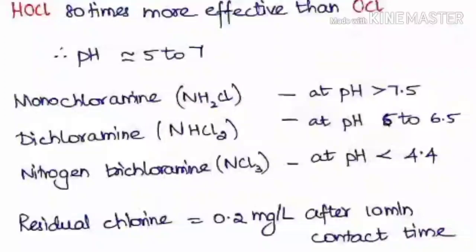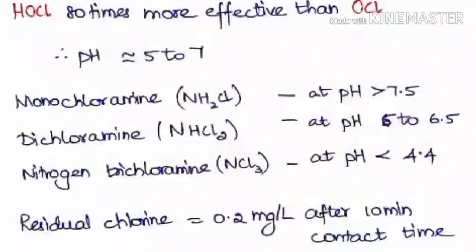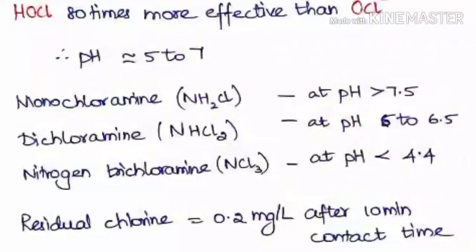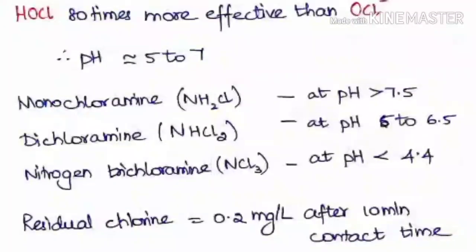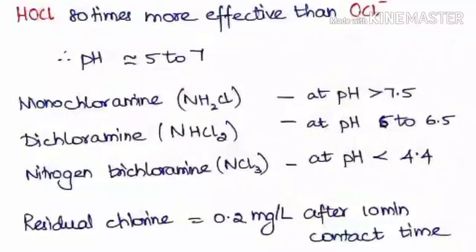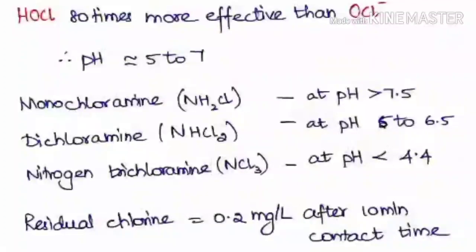Chlorine reacting with ammonia forms monochloramine, dichloramine, and nitrogen trichloramine — these various chloramines are called combined chlorine. Monochloramine is formed when pH is greater than 7.5, dichloramine when pH is 5 to 6.5, and nitrogen trichloramine when pH is less than 4.4. Since water is normally maintained near pH 7, dichloramine has a greater possibility of occurring.